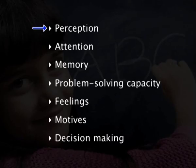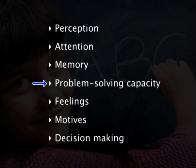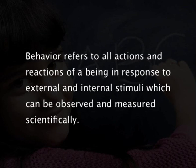The mental processes refer to private and cognitive processes that happen in the brain, such as perception, attention, memory, problem solving capacity, feelings, motives, decision making, etc. Behavior refers to all actions and reactions of a being in response to external and internal stimuli, which can be observed and measured scientifically.